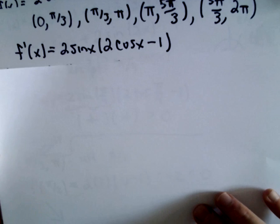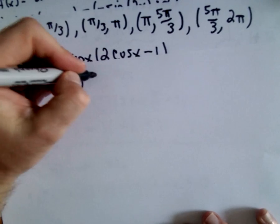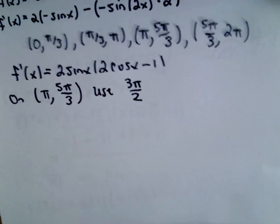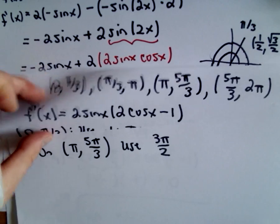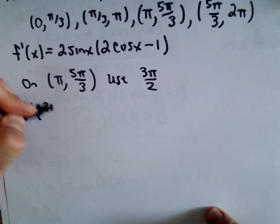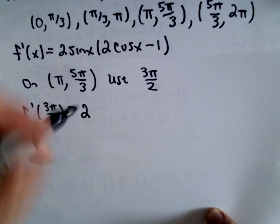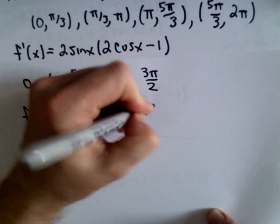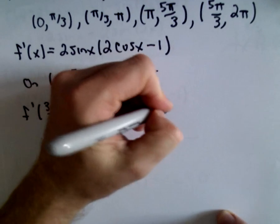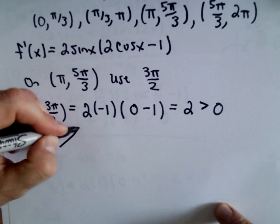On the interval pi up to 5 pi over 3, I'm going to use the point 3 pi over 2, because I get easy values for cosine and sine there. At 3 pi over 2, I have 2 times sine of 3 pi over 2. I'm at the bottom of the unit circle, so sine of 3 pi over 2 is negative 1. Cosine of 3 pi over 2 is 0, so I get 0 minus 1, giving me negative 2 multiplied by negative 1, which is positive 2 — greater than 0. So on the interval from pi to 5 pi over 3, the function is increasing.